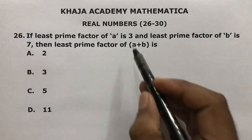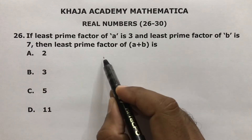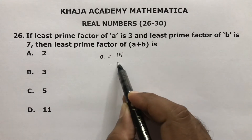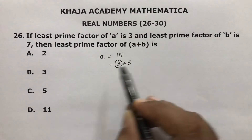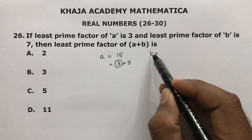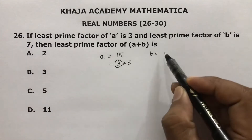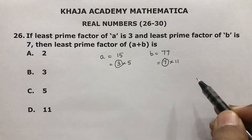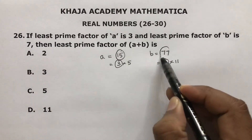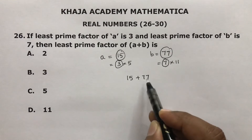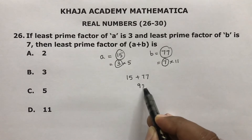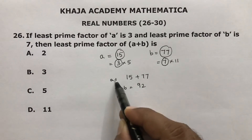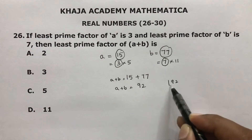If the least prime factor of a is 3 and least prime factor of b is 7, I'll take a as 15 because the prime factors of 15 are 3 and 5, and the least one is 3. For b, I'll take 77, which is 7 times 11, so the least prime factor of b is 7. Now adding a and b: 15 plus 77 is 92.